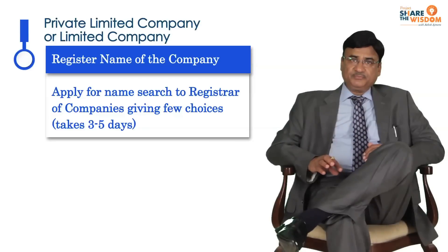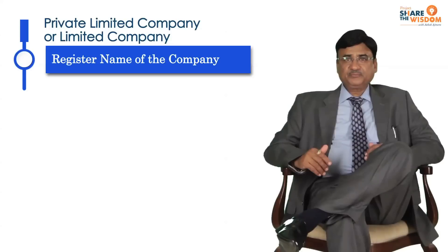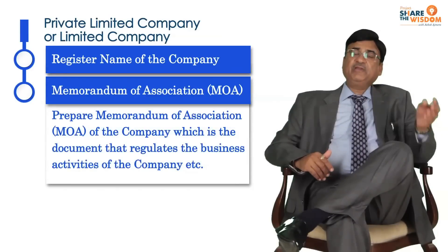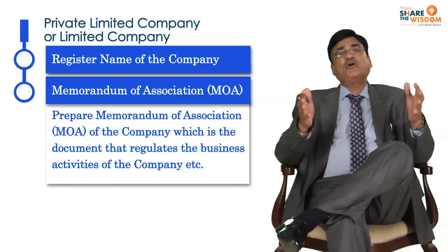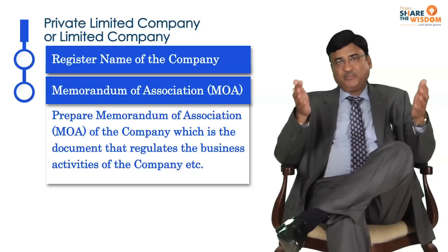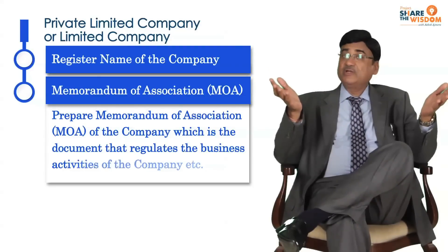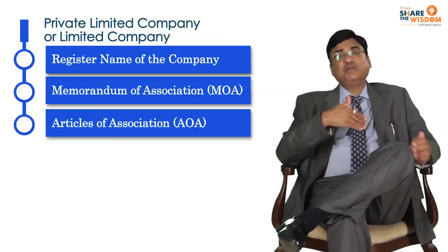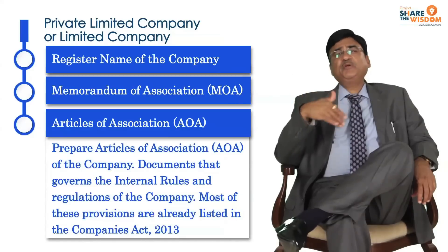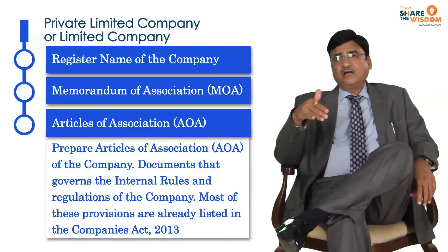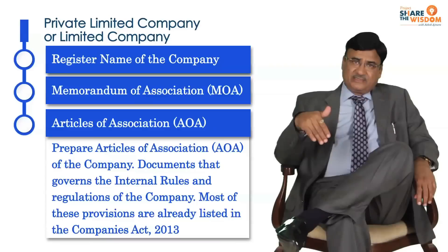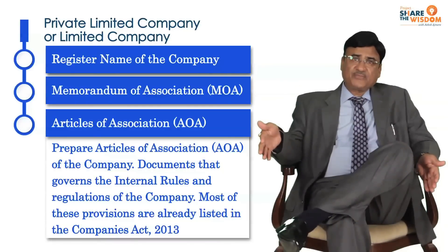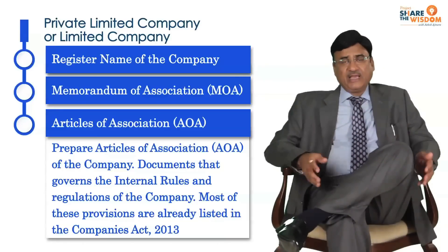Once the name is made available to you — a process that takes three to five days — you prepare a memorandum and articles of association. The memorandum specifies the object of the company: the prime object and other objects the company may pursue in future. The articles govern how the company will be run. Most provisions of the articles are already listed in the Companies Act 2013, which is applicable today in India, along with various amendments and rules.